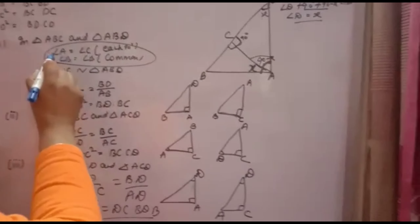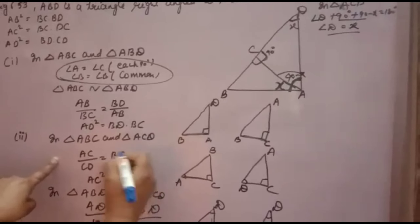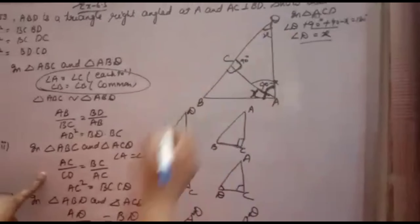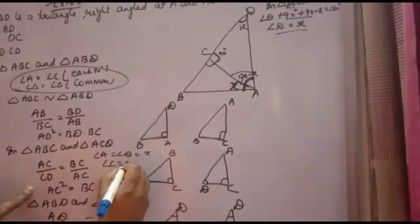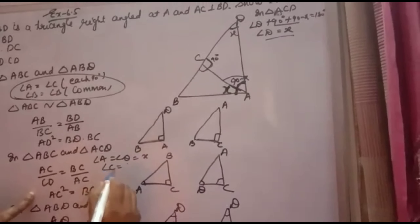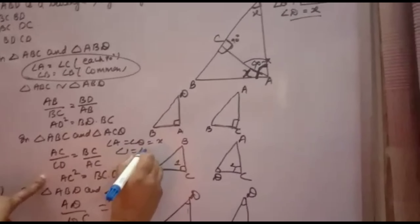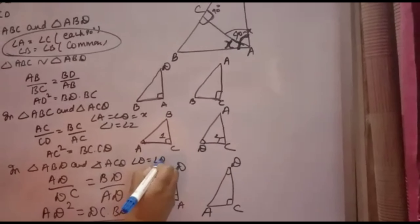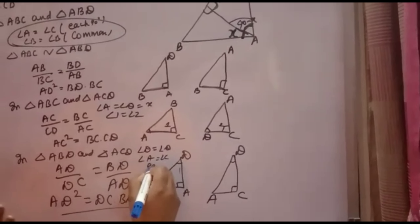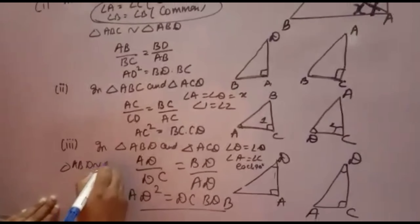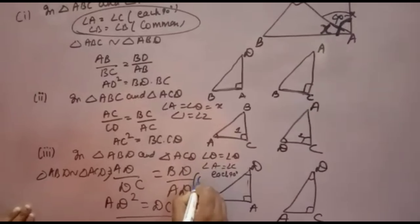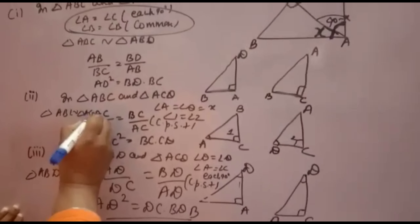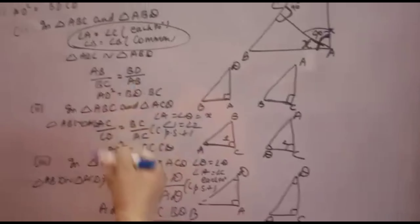In all these proofs you have to write the angles which are equal. For Part 2, write angle A equals angle D — we proved angle A is X and angle D is X — then angle C equals angle C (you can label them angle 1 and angle 2). For Part 3, write angle D equals angle D (common) and angle A equals angle C (each 90°). Therefore triangle ABD is similar to triangle ACD, and then by corresponding parts of similar triangles you get the required result. Same way, for Part 2, write triangle ABC similar to triangle ACD. The main thing is knowing which side to take where.